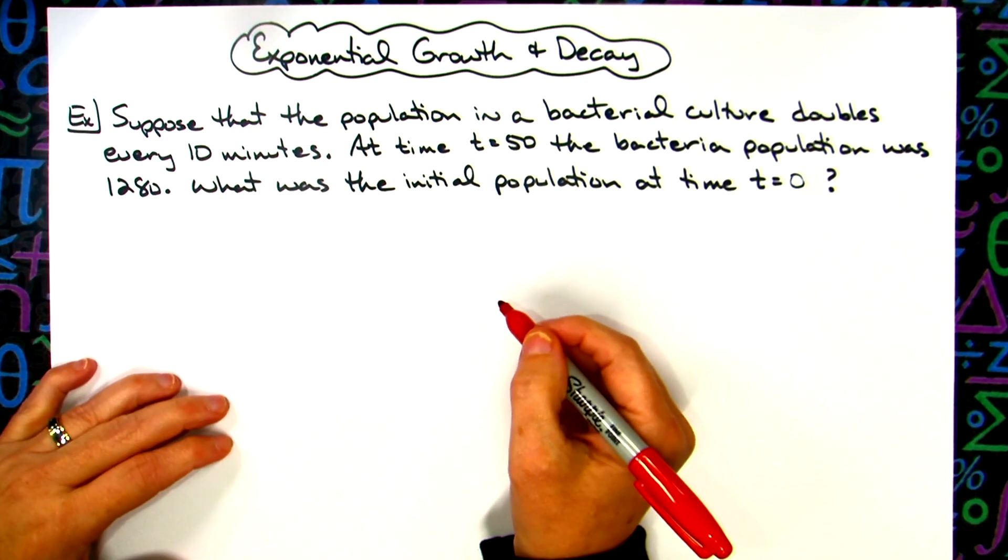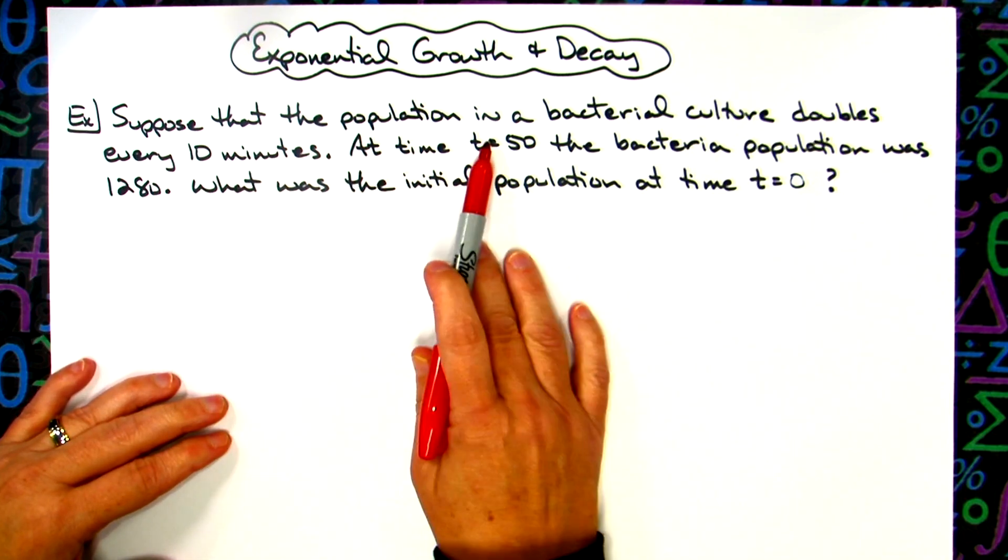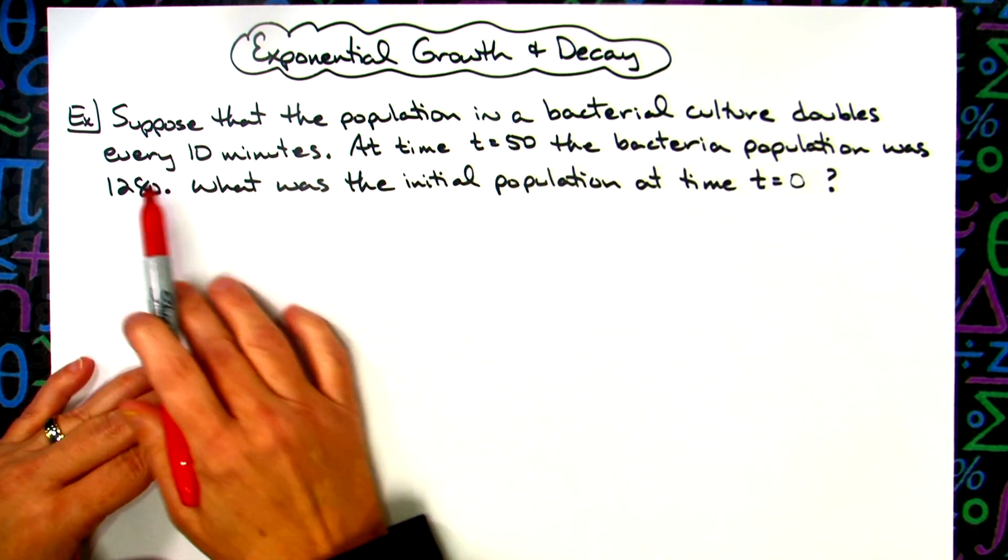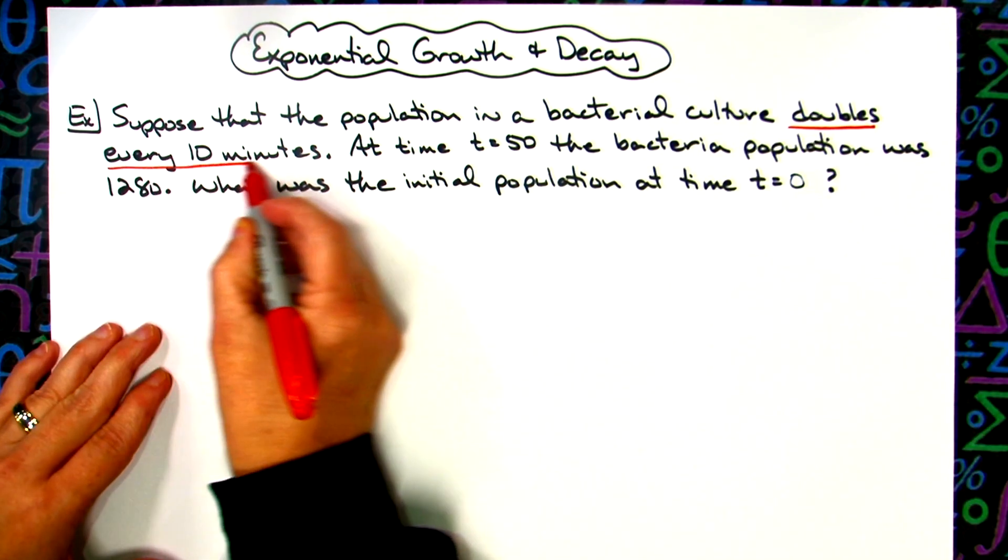In this video we're going to take a look at an exponential growth and decay type problem. Suppose that the population of a bacterial culture doubles every 10 minutes. That right there is an important piece of information.